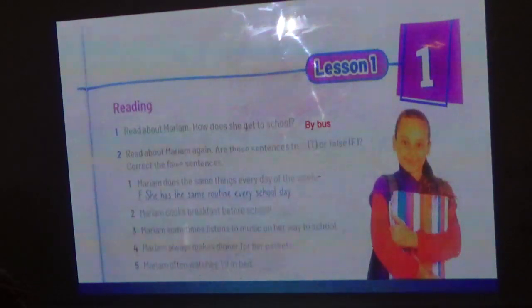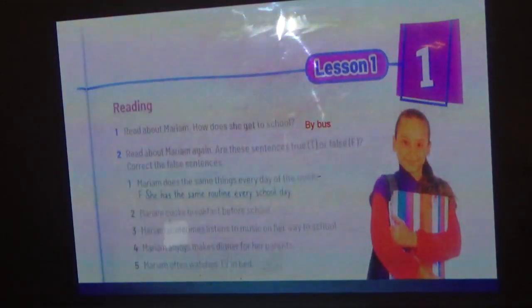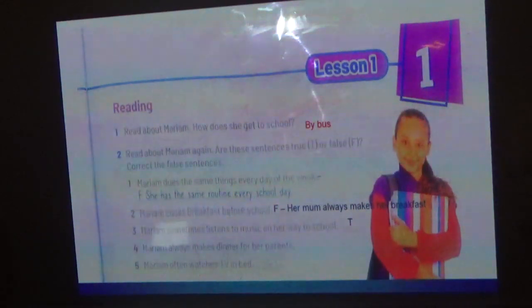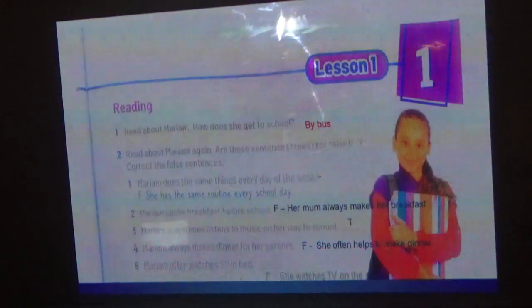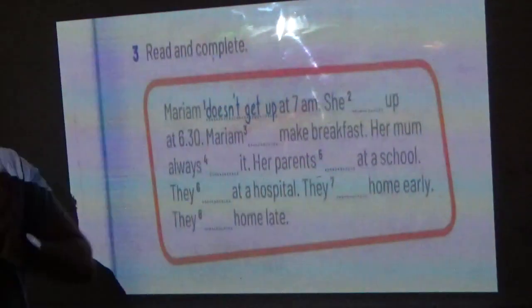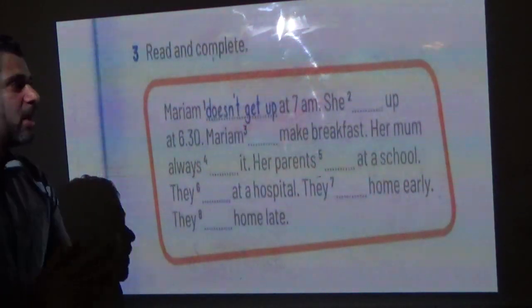Now read about Maryam again and decide if these sentences are true or false, then correct the false statements. Number two: Maryam cooks breakfast before school — false, her mom always makes her breakfast. Number three: Maryam sometimes listens to music on her way to school — true. Number four: Maryam always makes dinner for her parents — false, she often helps to make dinner. Number five: Maryam often watches TV in bed — false, she watches TV on the sofa. Next, read and complete. Maryam doesn't get up at seven o'clock — she gets up at 6:30. We use the present simple tense for daily routines.